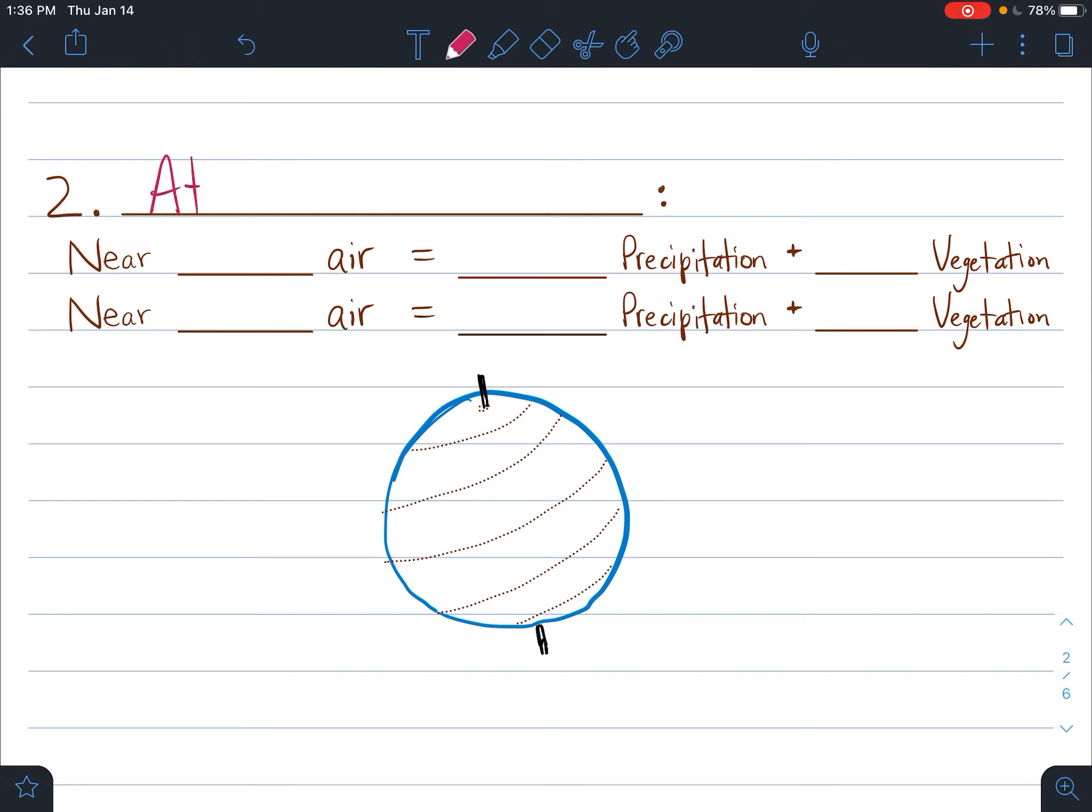So if you're near areas of rising air, in terms of the pockets of air that are large cells over our Earth, if you're near the rising air, that means that you're going to get more precipitation and more vegetation because there's more precipitation. And if you're near the sinking air, that means you're going to have less precipitation because the air is drier, and so you're going to end up having less vegetation because plants need water in order to grow.